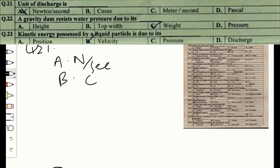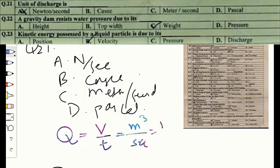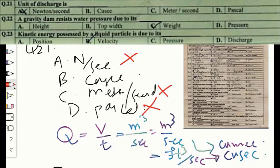Question number twenty-one: the unit of discharge is option A — newton per second, option B — cubic feet per second (cusec), option C — meter per second, or option D — pascal. Discharge equals volume of fluid per unit time — cubic meters per second (SI) or cubic feet per second (fps), called a cusec. Newton per second and meter per second are not units of discharge; pascal is a unit of pressure. The correct option is B — cusec.